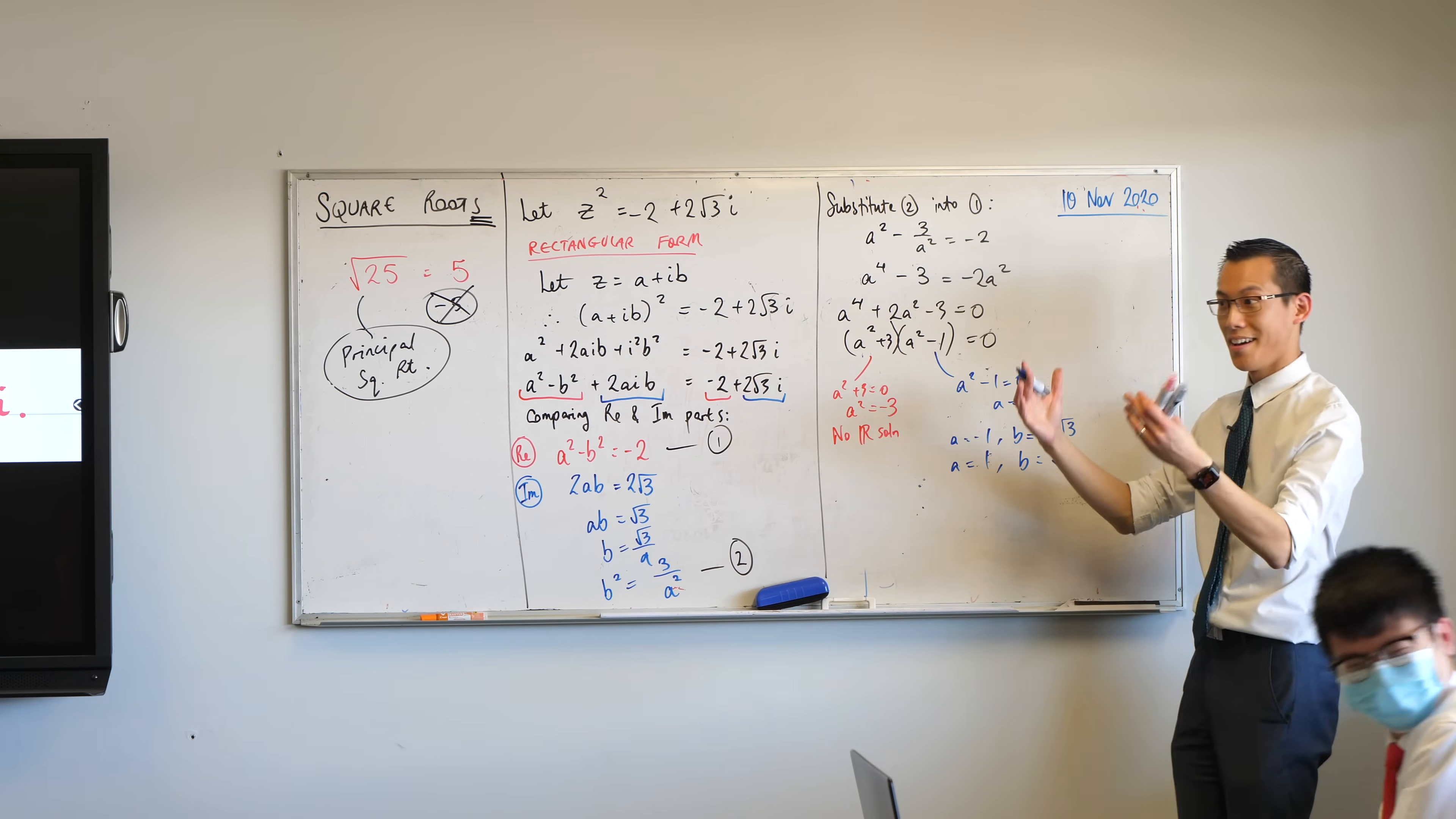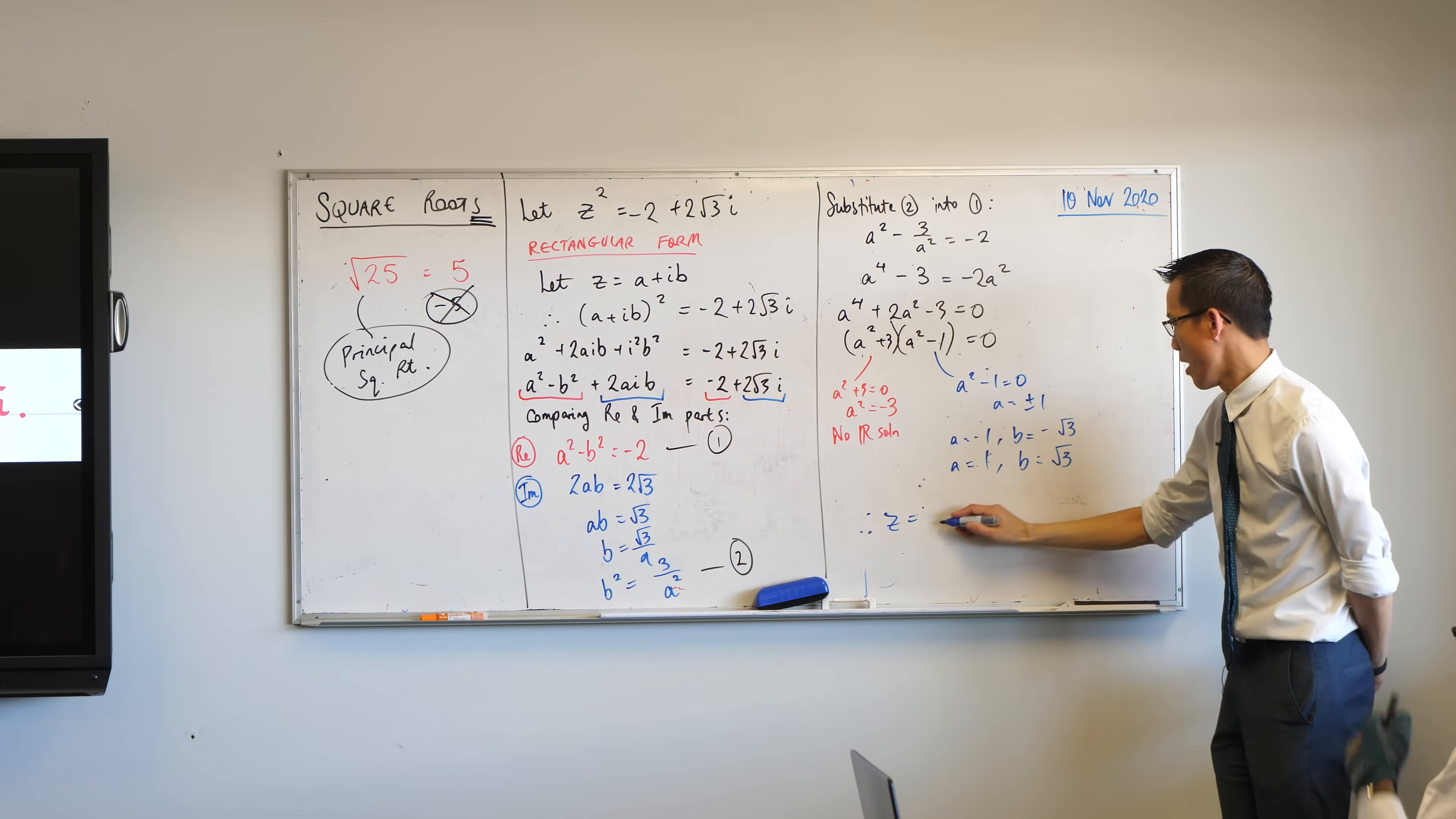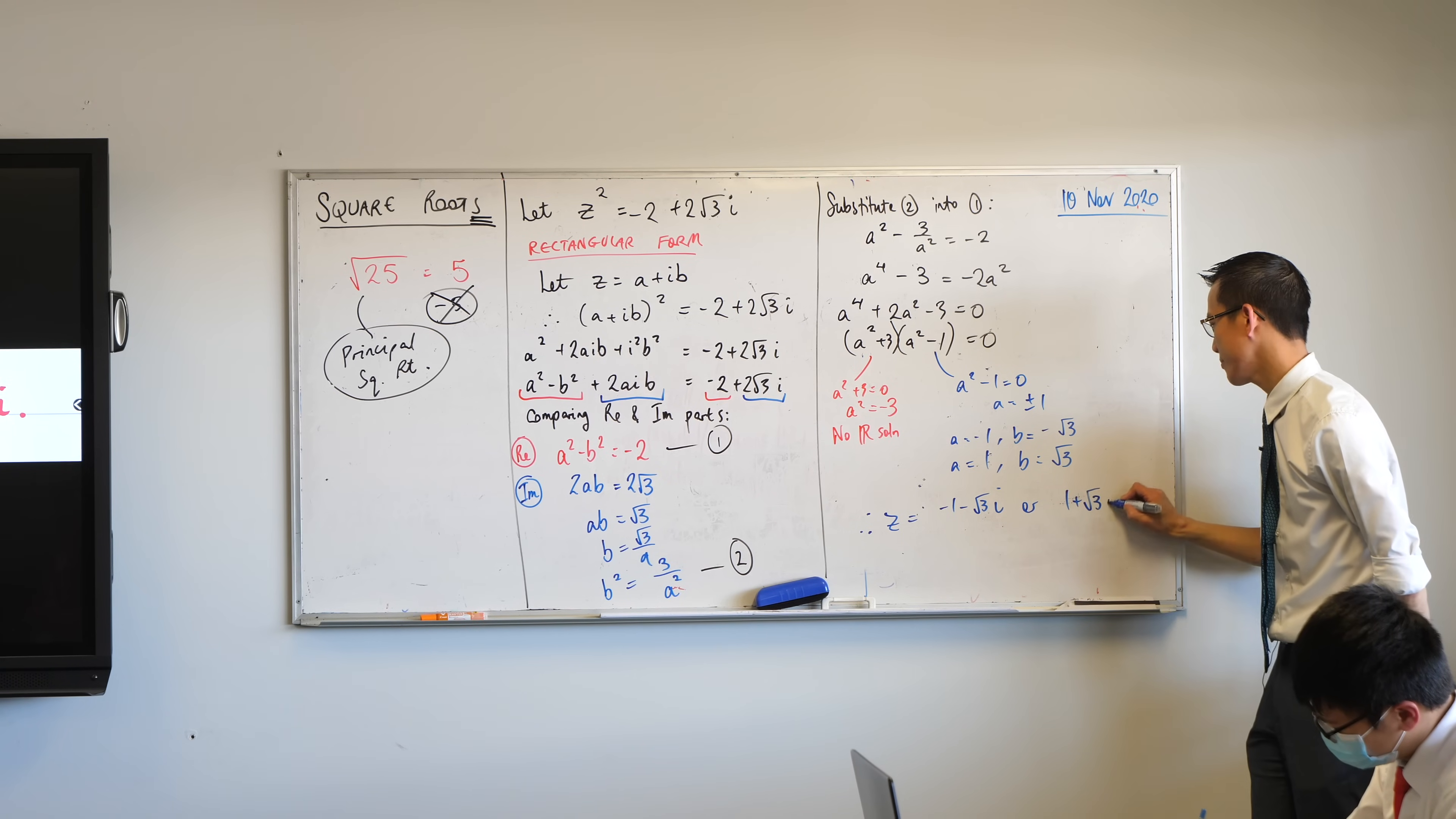Remember. Are you okay with that? So I have solutions. Z is equal to... I'll put it back in a rectangular form because that's how it was presented to me. Here's my first one. Minus one minus root three i, because that's the imaginary component. Or the positive version.